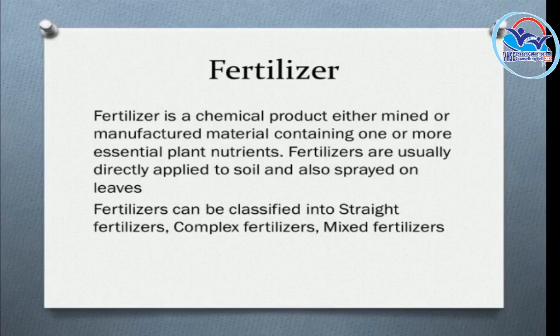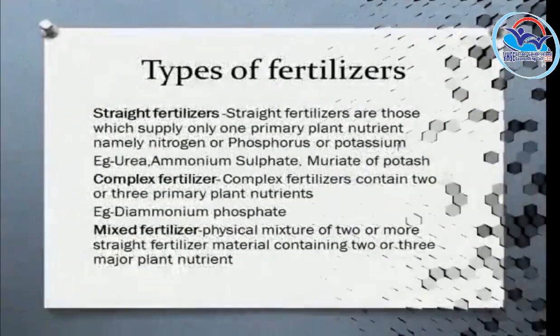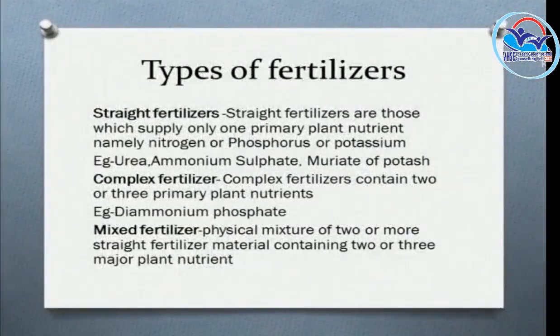Types of fertilizers include straight fertilizers, complex fertilizers, and mixed fertilizers. Straight fertilizers supply a primary plant nutrient — nitrogen, phosphorus, or potassium.